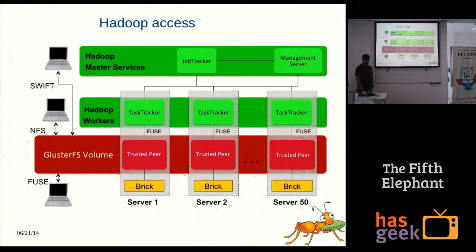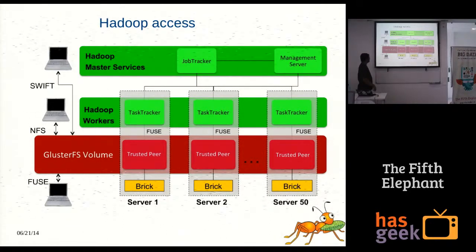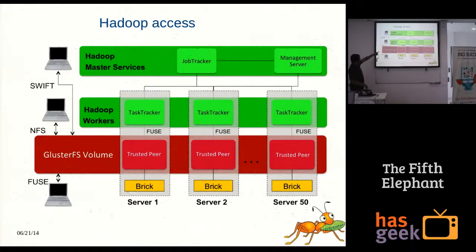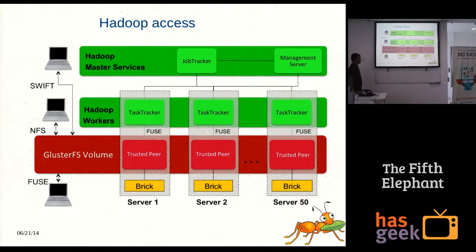This diagram shows a particular implementation of GlusterFS with Hadoop. This is the GlusterFS volume, and you can see the other protocols — NFS, FUSE, and Swift — also accessing the GlusterFS volume in the same way. There are many servers here, each server has a brick, and can also run the MapReduce tasks. So a lot of things are consolidated together, making it a better hardware utilization implementation.